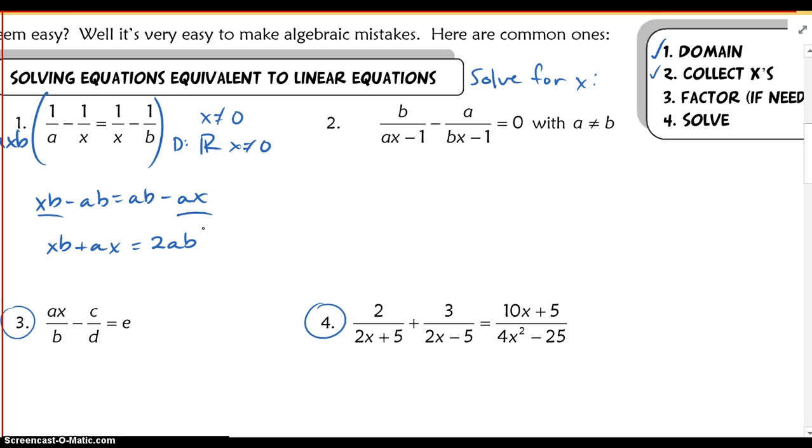Now, step 3 is pretty crucial. It's not necessary in every case, but here it is. We want to factor, so if you look, we have x b and a x. They have a common factor of x. So I'm going to take that out, and I'm left with x times b plus a. And now I can isolate the x pretty easily by dividing out that b plus a. So I am left with 2 a b over b plus a.